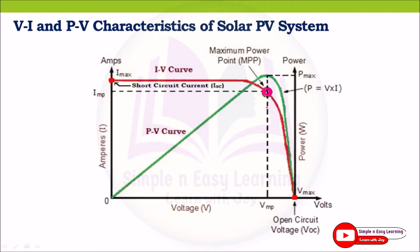The voltage corresponding to the maximum power point is called VMP (voltage at maximum power point) and the corresponding current is IMP (current at maximum power point). These readings are needed to find the fill factor. The rated VMP lies between 75 to 90 percent of open circuit voltage, and IMP is 85 to 95 percent of short circuit current.